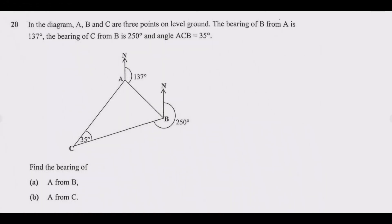Let us look at question 20. In the diagram, A, B, and C are three points on level ground. The bearing of B from A is 137 degrees, the bearing of C from B is 250 degrees, and angle ACB equals 35 degrees.